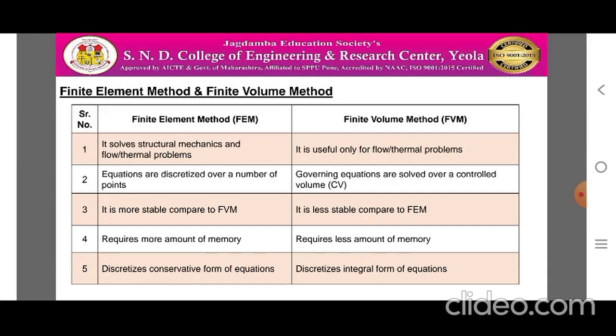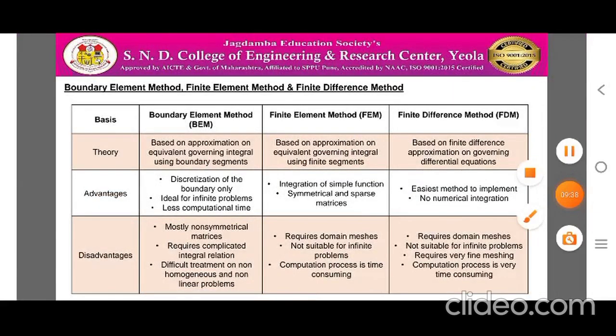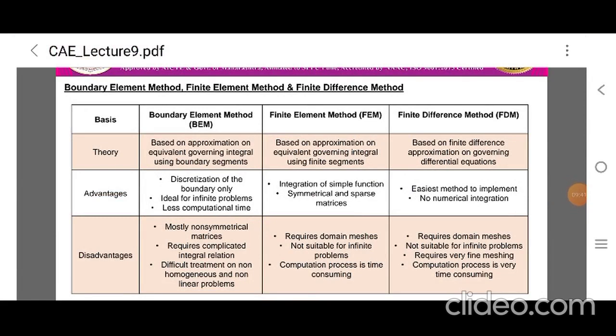Point four: Finite Element Method requires more memory, while Finite Volume Method requires less memory. Point five: Finite Element Method discretizes the conservative form of equations, while Finite Volume Method discretizes the integral form of equations. The comparison between Finite Element Method and Finite Volume Method is shown on the screen with basis of theory, advantages, and disadvantages.